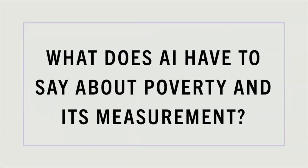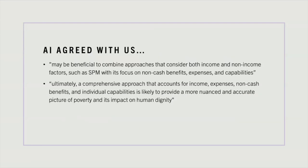We decided to utilize AI after we had determined what we thought was best to measure poverty. We were curious to see what AI would come up with, but we wanted to write our own thesis before being swayed by AI. After all of this, we prompted AI to tell us what the best combination of the different measurements of poverty is to best protect human dignity. It turned out that AI agreed with us, saying that SPM was the best measurement to use, but that it is beneficial to combine approaches that consider both income and non-income factors.